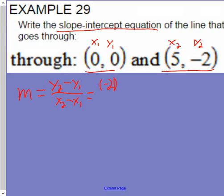y2 is negative 2 minus y1, which is 0, all over x2, which is 5, minus x1, which is 0. Negative 2 minus 0 is negative 2 over 5 minus 0, which is 5, so our slope is negative 2 over 5.